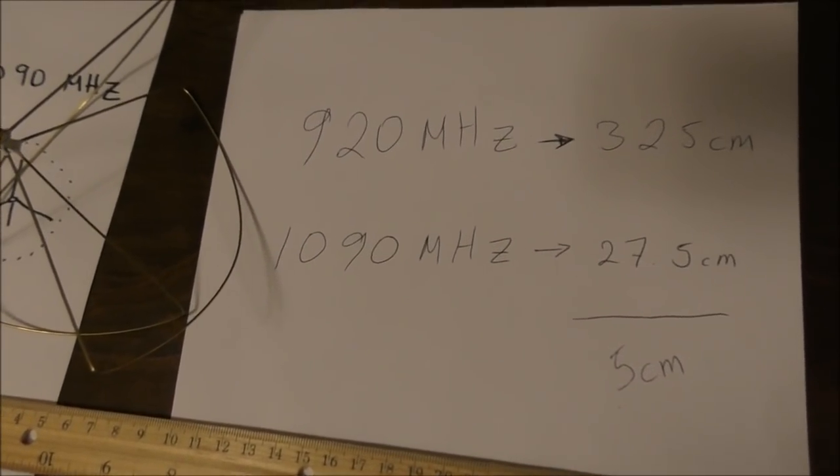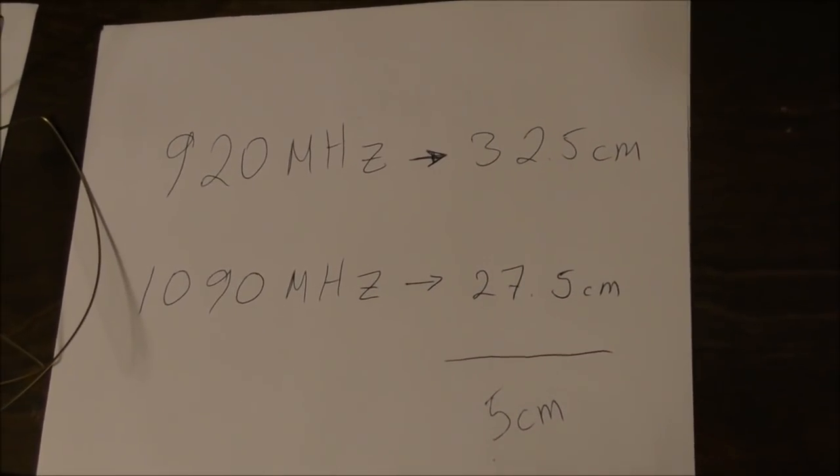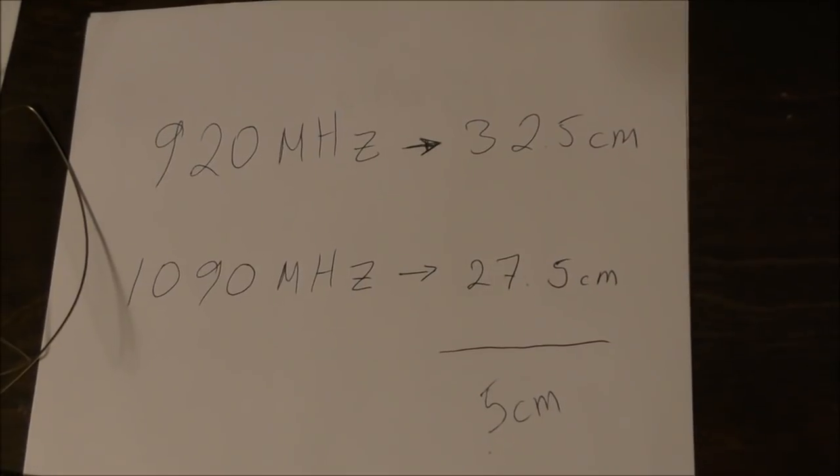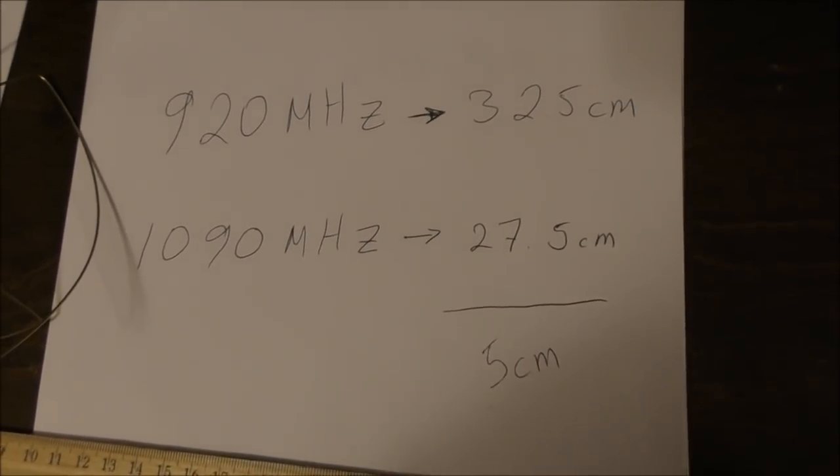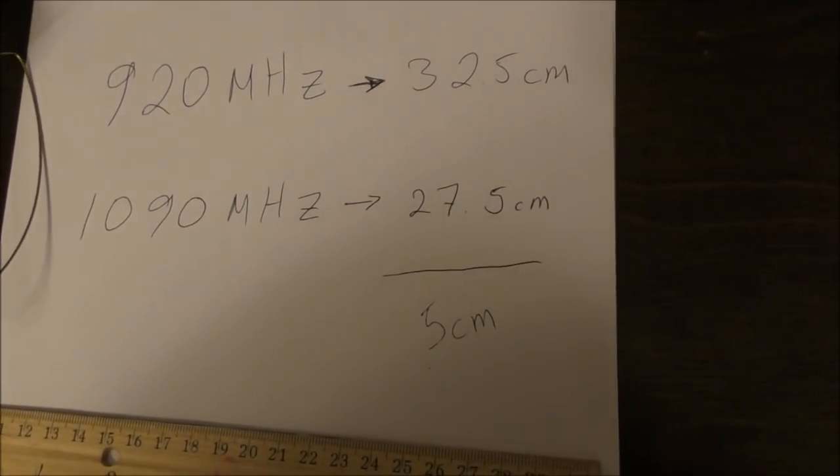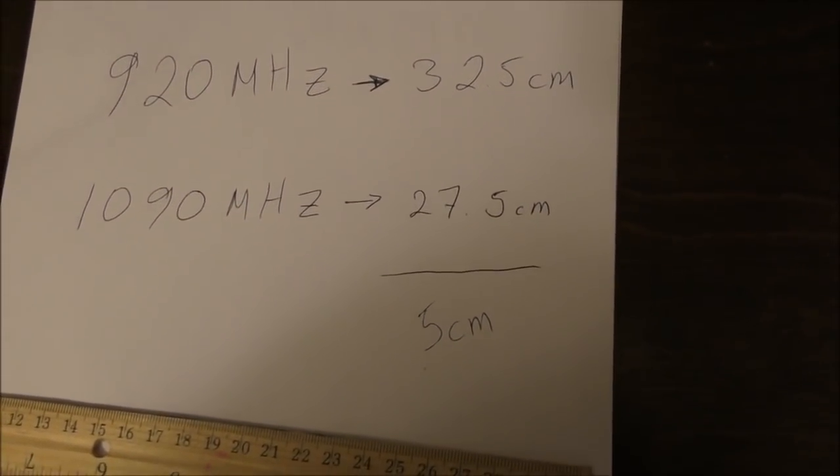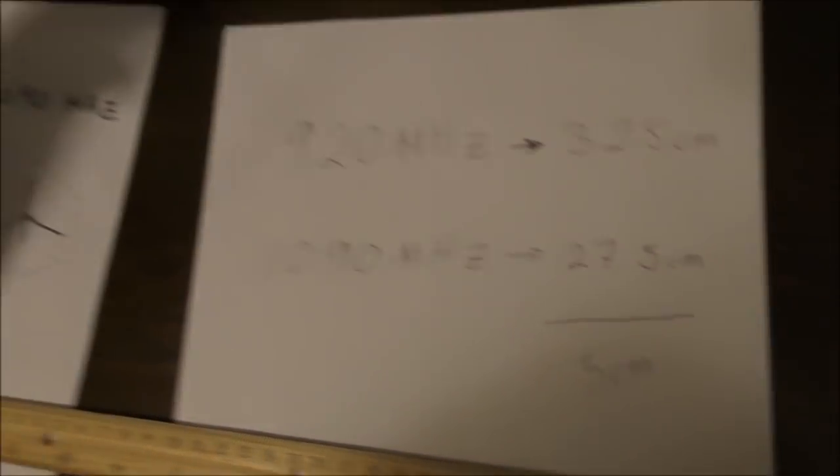So, as the antenna is now for 920 MHz, its elements are around 32.5 cm long, and our target is to tune it to 1090 MHz, which is around 27.5 cm. So, we need to cut 5 cm out of all three elements.